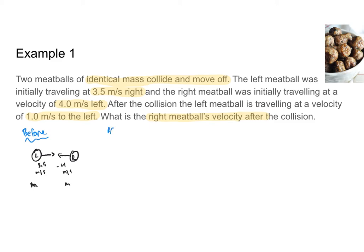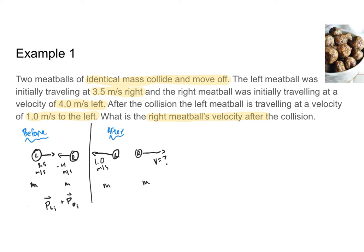Now I'm ready to draw my after side. I draw my left and right meatballs again. This time, my left meatball is traveling to the left at 1 meter per second, and my right meatball is traveling at some mystery velocity. The masses of our two meatballs are the same. Now I'm ready to start with my initial momentum equation. My initial momentum is equal to my final momentum — the momentum of the left meatball plus the momentum of the right meatball initially equals the momentum of the left meatball after the collision plus the momentum of the right meatball after the collision.